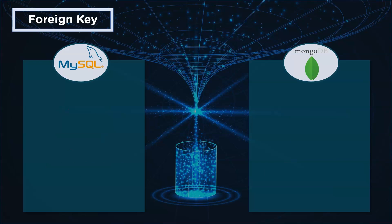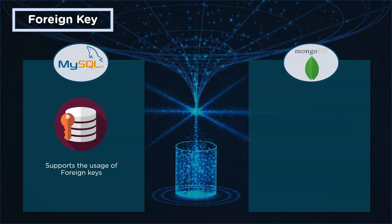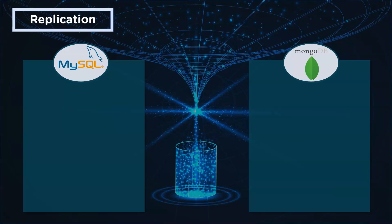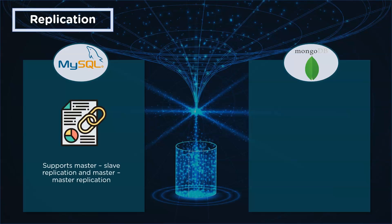Next up is foreign keys. MySQL supports the usage of foreign keys. SQL uses foreign keys to link one table to another. These foreign keys make data retrieval easy, especially when there are multiple tables interlinked with one another. In the case of MongoDB, there is no support for foreign keys.